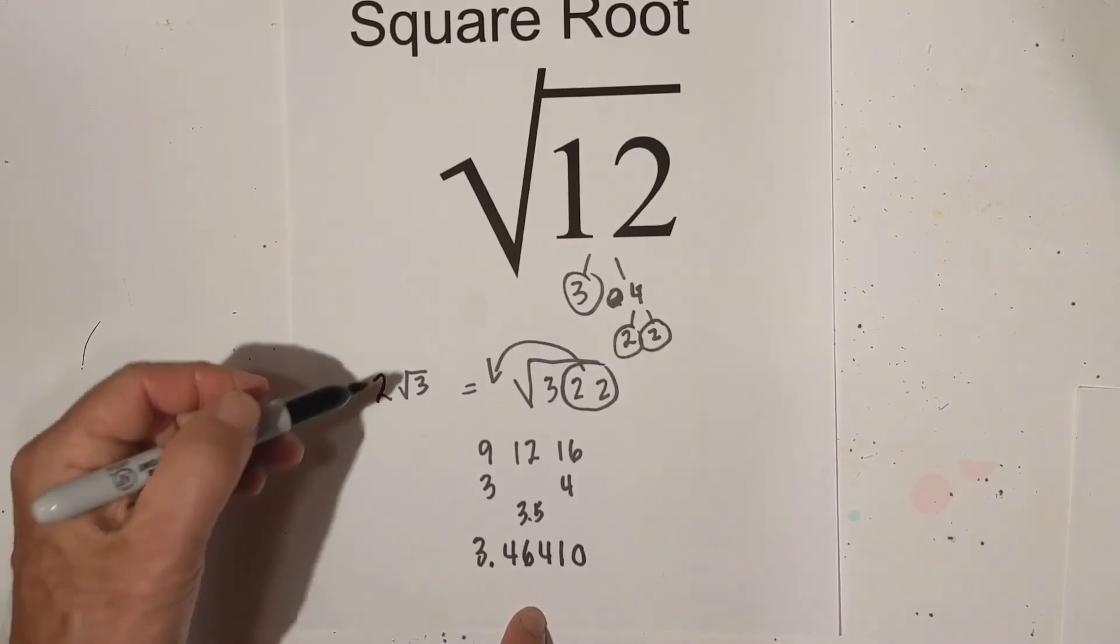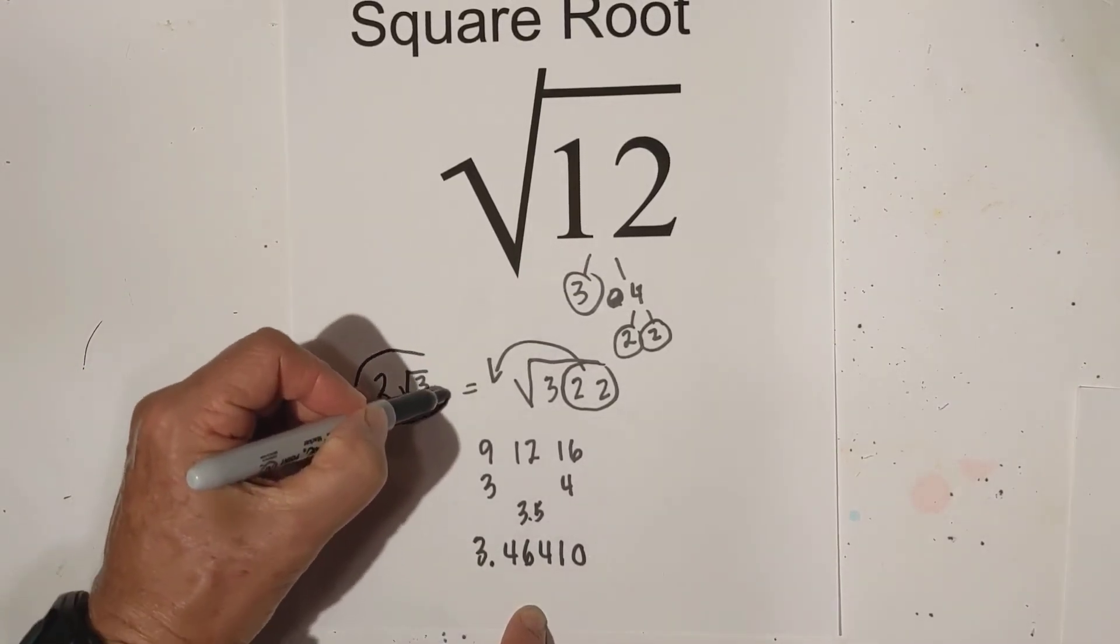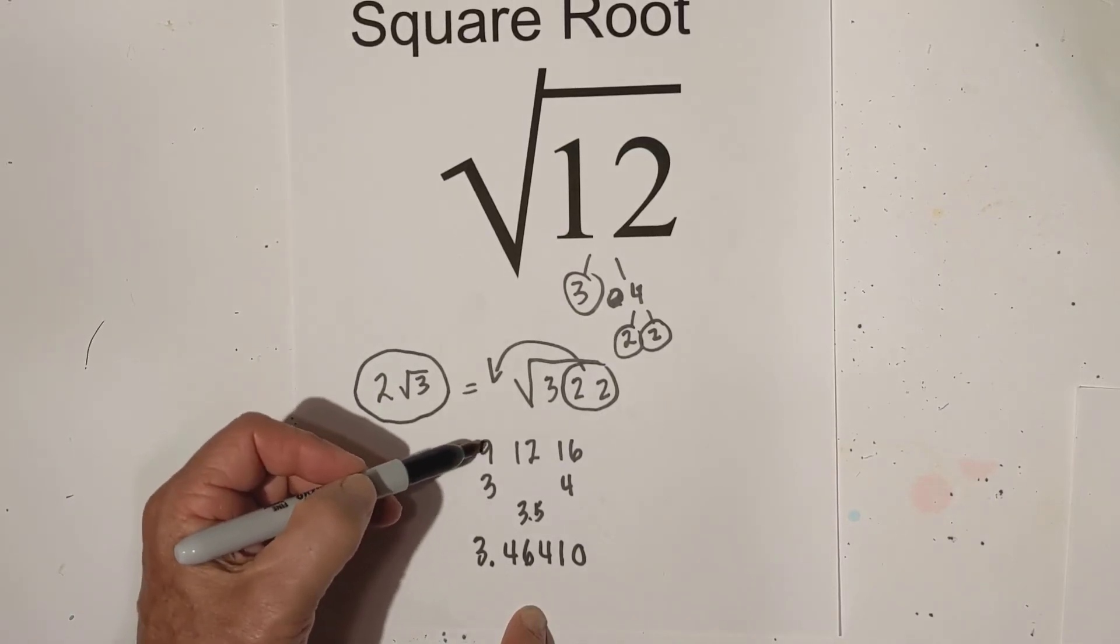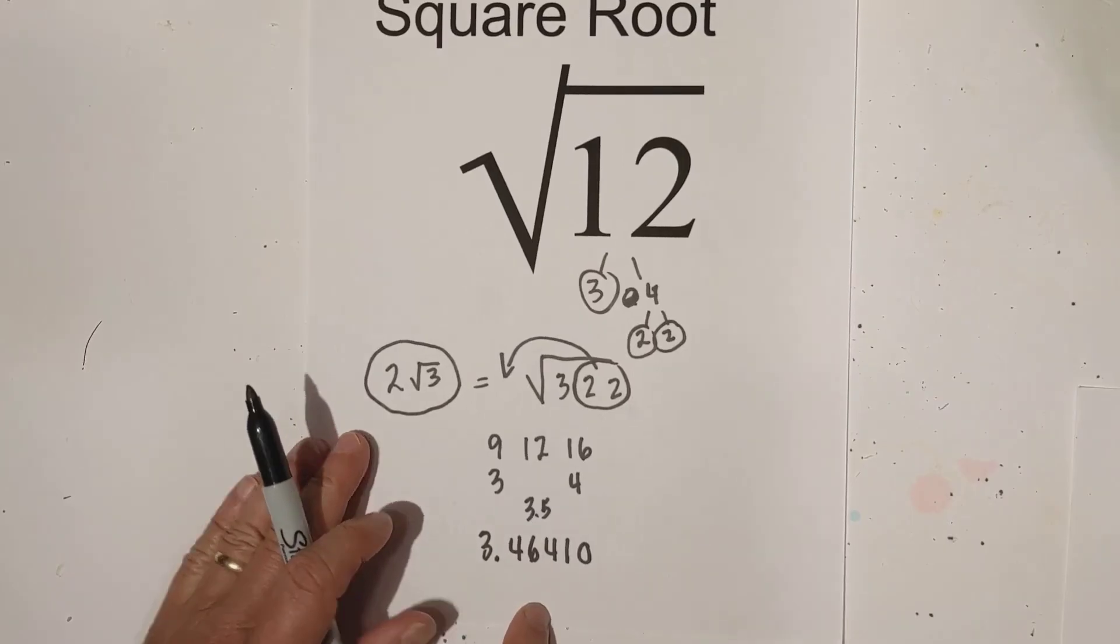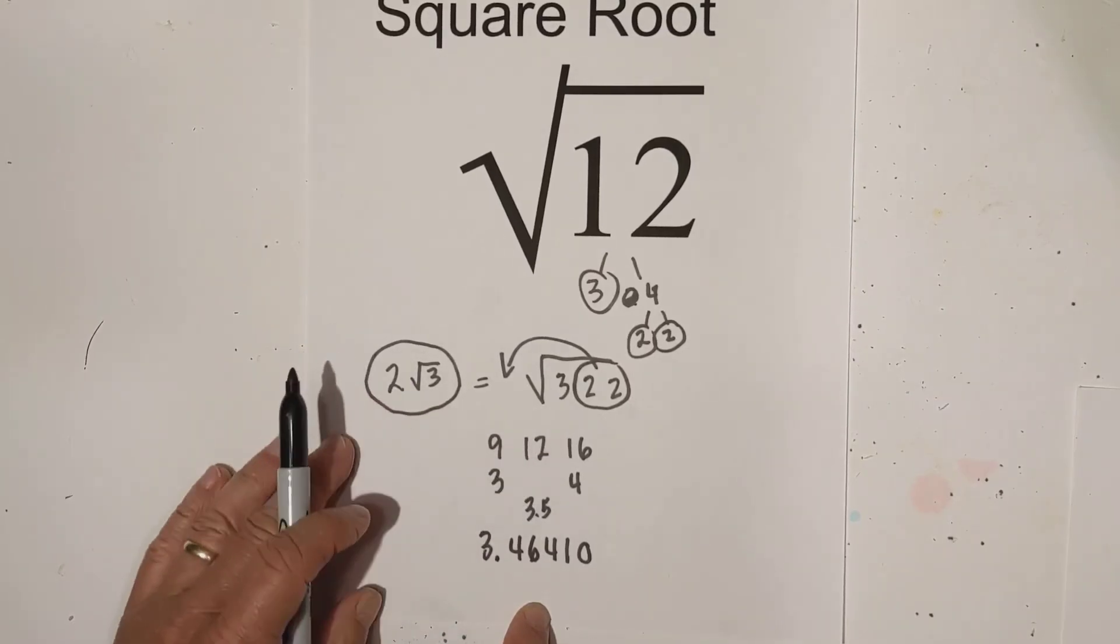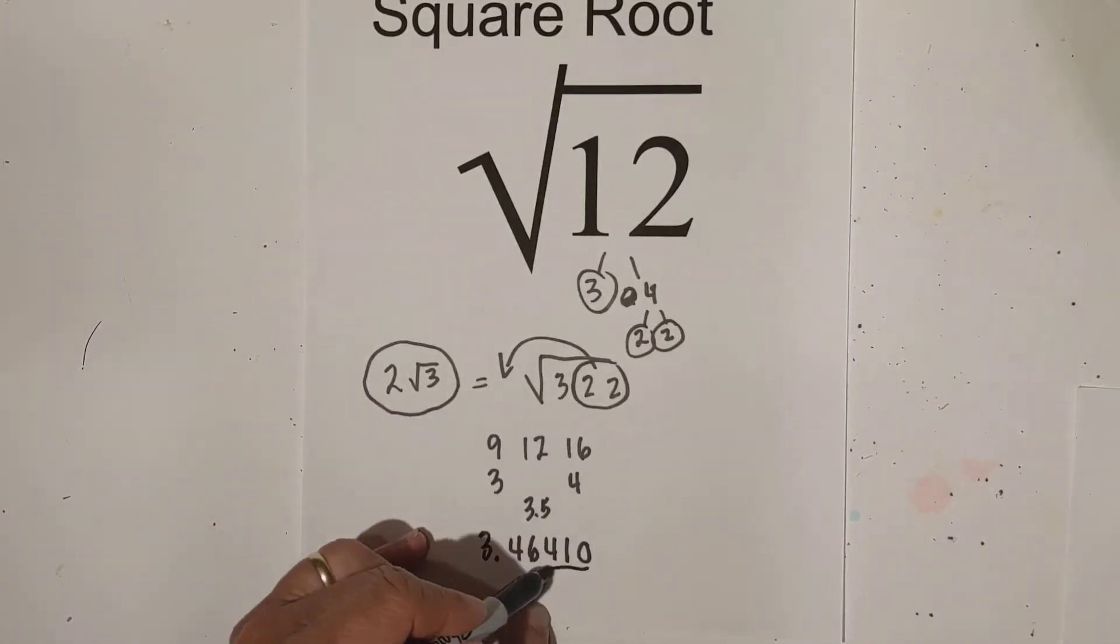So there it is. So in summary, simplified to two square root three, you can estimate it because you have a perfect square nine and 16 on both sides, estimate it around 3.5. And here it is to five places.